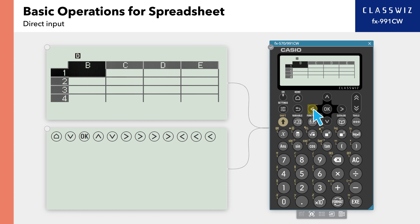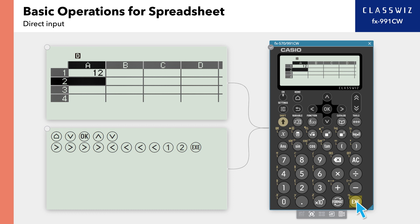Let's move back to cell A1 and enter the number 12. After entering the number, you automatically move to the cell below.